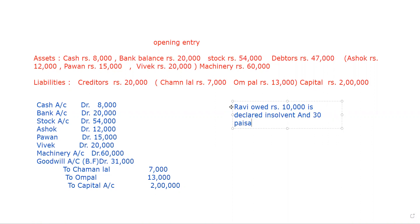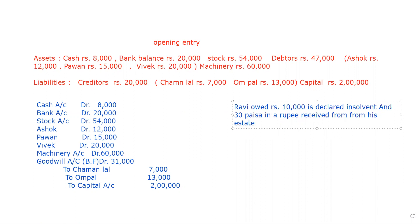For example, suppose Ravi owes Rs. 10,000 from us, meaning he becomes the debtor of the business. He is declared insolvent and only 30 paisa per rupee is received from his estate. 30 paisa means 30% because one rupee consists of 100 paisa, so it is calculated as a percentage. In accounting, 30 paisa is equivalent to 30%.